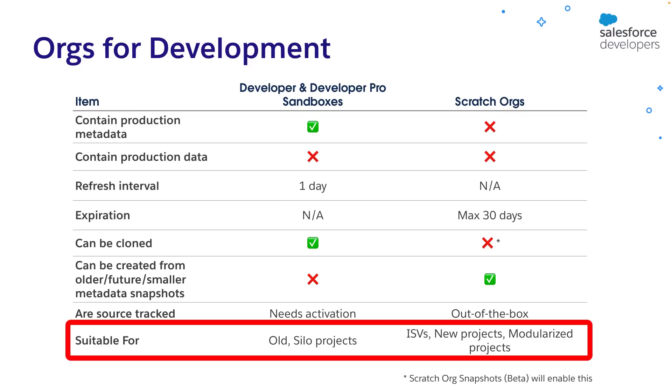Generally speaking, if your org has an old and complex implementation, you may choose developer sandboxes as they will facilitate metadata setup. If you are an ISV, creating a new project from scratch, or you have modularized your org customizations, you may choose scratch orgs instead. Whether you choose developer sandboxes or scratch orgs for development, a general best practice is to have just one development environment per developer. That way, you will avoid conflicts between them, making the development process much more seamless.